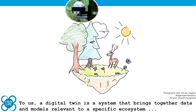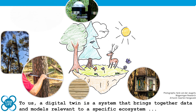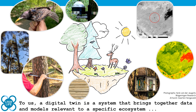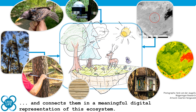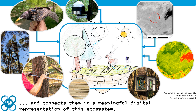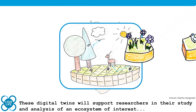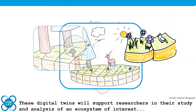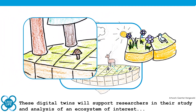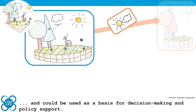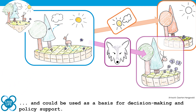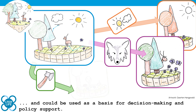A digital twin is a system that brings together data and models relevant to a specific ecosystem and connects them in a meaningful digital representation of this ecosystem. These digital twins will support researchers in their study and analysis of an ecosystem of interest and could be used as a basis for decision making and policy support.